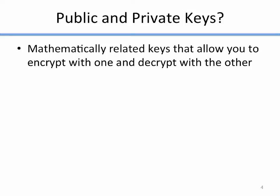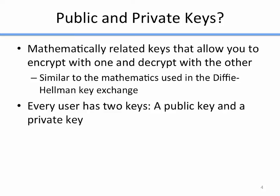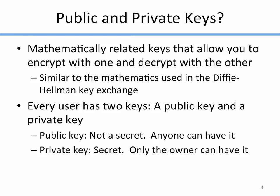The two keys are mathematically related so that you can encrypt with one and decrypt with the other, similar to the mathematics used in the Diffie-Hellman key exchange. In fact, some public key crypto systems are built on the same mathematics as Diffie-Hellman. In a public and private key world, every user has two keys — a public key and a private key. The public key is not a secret and anyone can have it; the more people that have it, the better. The private key is a secret known only to the owner. If the owner loses or has their private key stolen, that's a major issue.